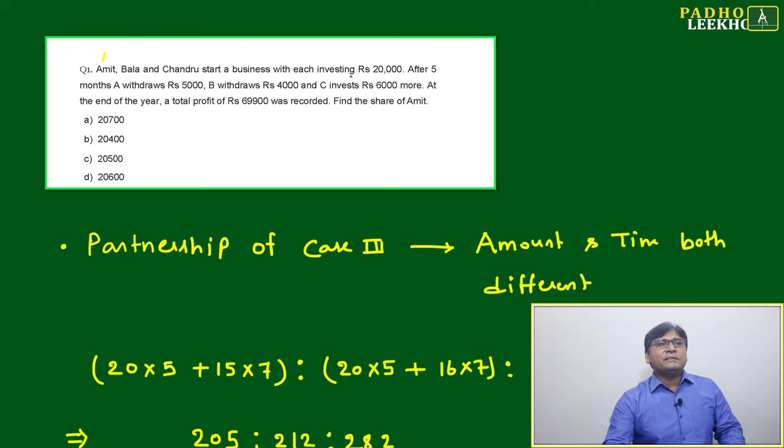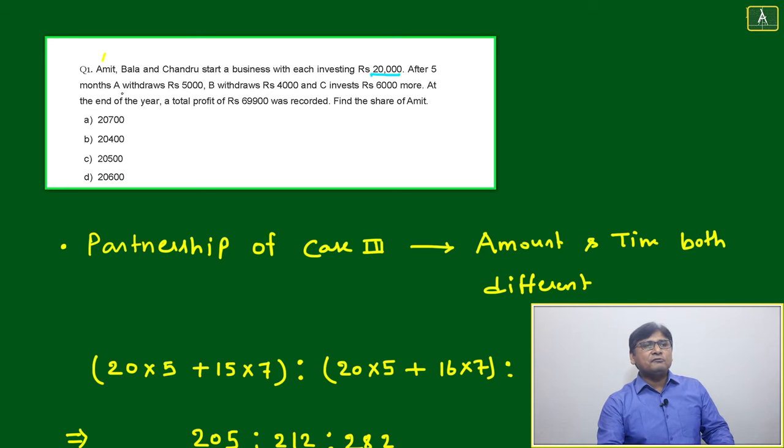Amit, Bala and Chandru start a business with each investing Rs 20,000. After 5 months, Amit withdraws Rs 5,000. That's the story we're given.